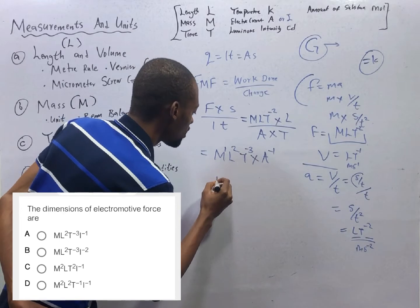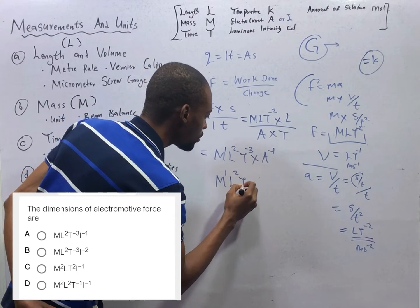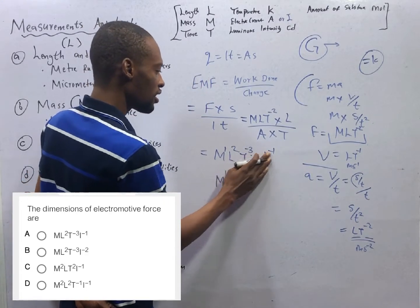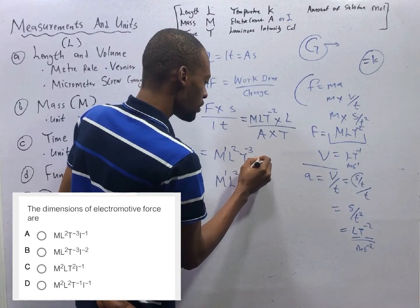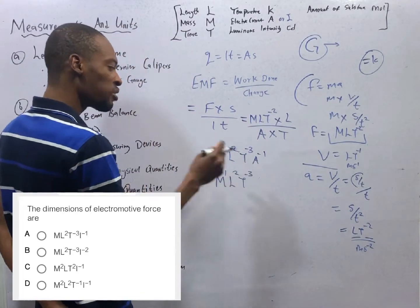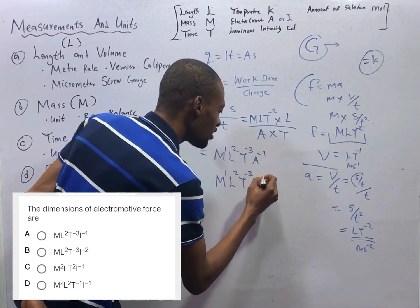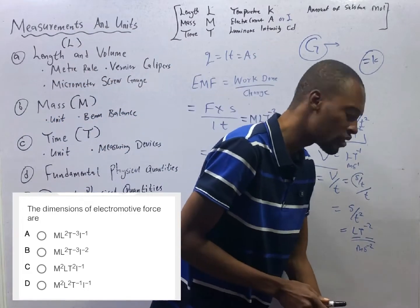This goes up to become minus 1. Multiplying everything, you get this. So this is the same thing as 1. You therefore get M 1, L raised to the power of 2, T raised to the power of minus 3. Then this is A, A raised to the power of minus 1. If we decide to change A to I, which both are correct, we will have I raised to the power of minus 1.